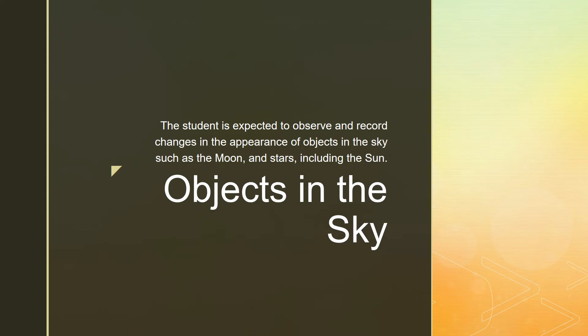Today we're going to talk about objects in the sky. The objective is that the student is expected to observe and record changes in the appearance of objects in the sky, such as the moon and stars, and including the sun. Scholars, Ms. Robinette here. Let's get together today and talk about objects in the sky.